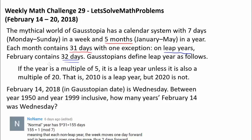Gaustopians define leap year as follows: if the year is a multiple of 5, it is a leap year, unless it is also a multiple of 20. So 2010 is a leap year because it is a multiple of 5, and 2015 is a leap year for the same reason. But 2020, even though it is a multiple of 5, is also a multiple of 20, so that disqualifies 2020 from being a leap year.